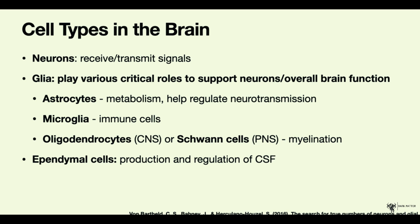Other than neurons, we also have a huge class of cells which we refer to as glia — these are all the non-neuronal cell types found in the nervous system. Traditionally they were thought to only provide support for neurons, but recent research has started to show they actually have critical roles that go beyond just support. One important difference is that glia are not able to transmit electrical impulses — this is something specific and unique to neurons.